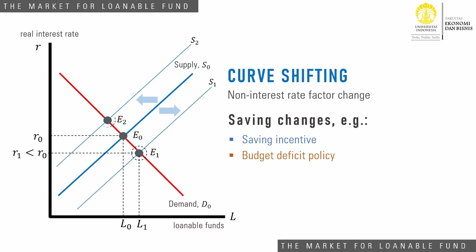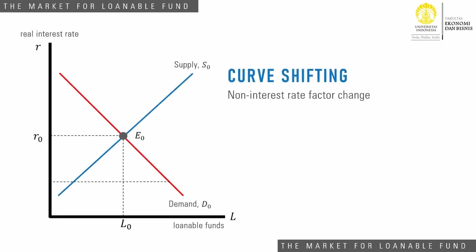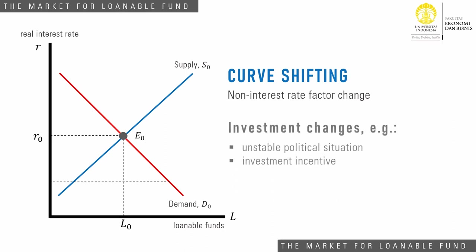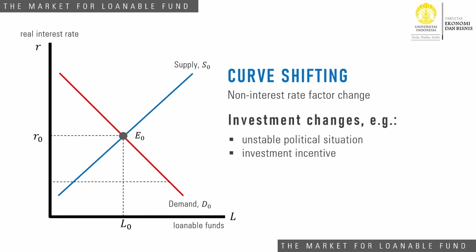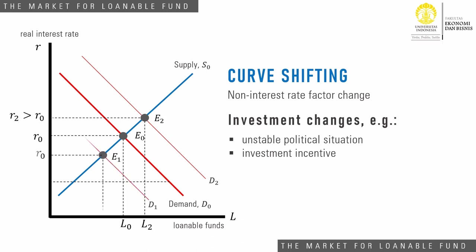Similar to supply, the demand for loanable funds is not only affected by the real interest rate. Demand for investment may be affected by an unstable political situation, or again because of government policy — such as an investment tax credit policy or tax holiday policy — that gives incentives to invest. In either case, the demand curve will shift.